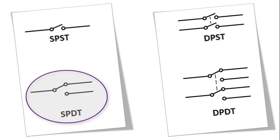An SPDT, or single pole double throw switch, has three terminals — one more than the simple SPST switch. It has one input contact and two output contacts. This means that an SPDT switch has two on positions and one off position. Most slide switches have an SPDT configuration and are used to change over between two outputs.